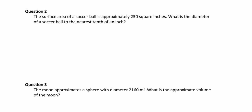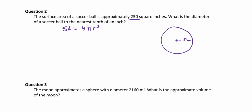The next problem says the surface area of a soccer ball is approximately 250 square inches — what is the diameter of a soccer ball to the nearest tenth of an inch? Let's draw a sphere and write down the equation: surface area is equal to four pi r squared. They've given us the surface area, so I can solve for the radius, then multiply by two to get the diameter. Surface area equals 250.